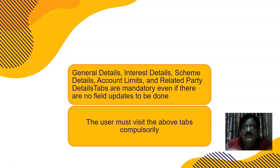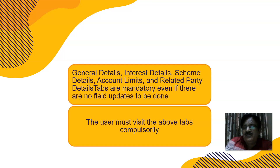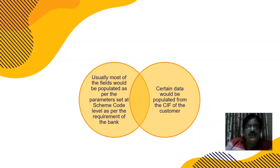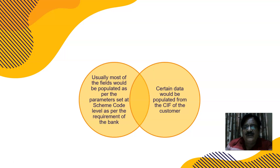These tabs are mandatory — even if there is no field update needed, the user or verifier must visit all tabs, otherwise the system will show errors with hyperlinks on screen. It's better to make it a habit to visit all tabs without hesitation. Most fields are automatically populated as per the parameter set of the scheme code entered.